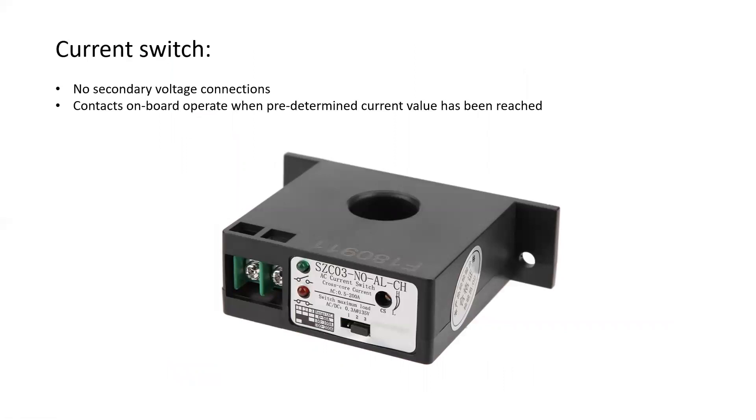One of the other ways we can use it is with what's called a current switch. Now there's no secondary voltage connections on a current switch. And what instead it has is a couple of terminals for a normally open or a normally closed contact. So what it has inside it, it's got a little relay. And it's using the secondary voltage of that coil to operate the relay. So when the current reaches a predetermined value, which is set by that little screw there, it will close the set of contacts and we can use it to then operate any other type of predetermined control sequence that we need. Current switches are used a lot in HVAC controls.